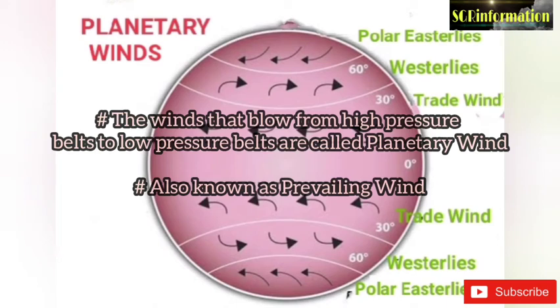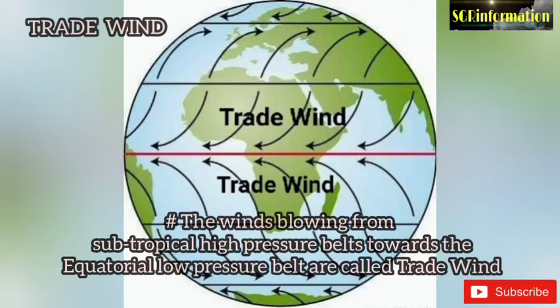Planetary wind: the winds that blow from high pressure belts to low pressure belts are called planetary winds. They are also known as prevailing winds. Trade winds: the winds blowing from subtropical high pressure belts towards the equatorial low pressure belt are called trade winds.